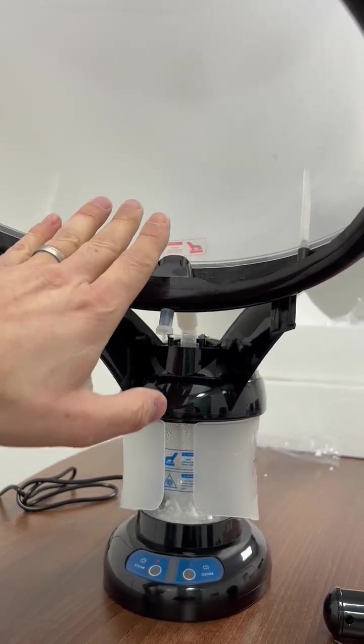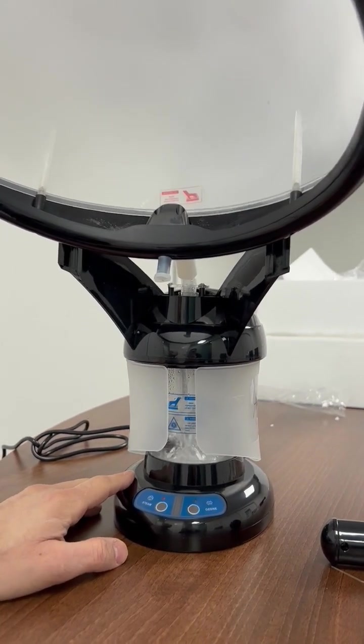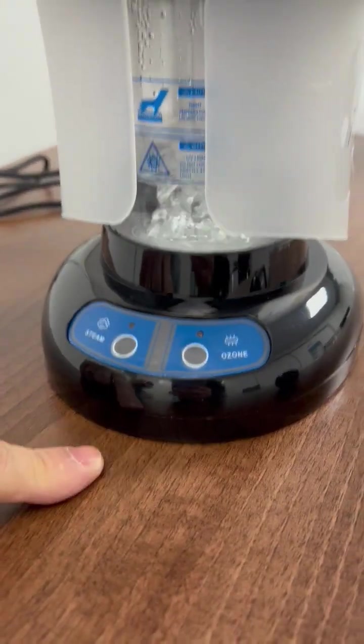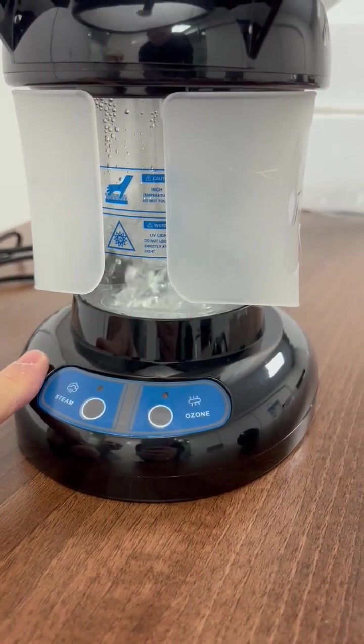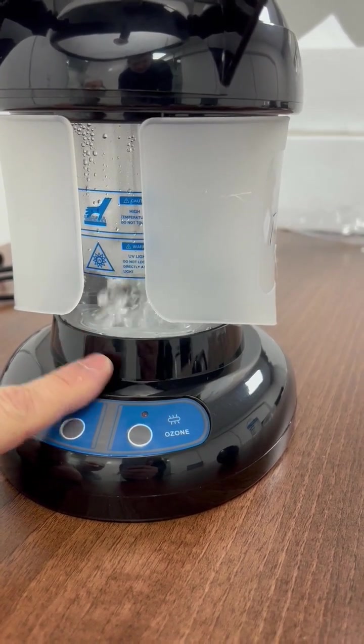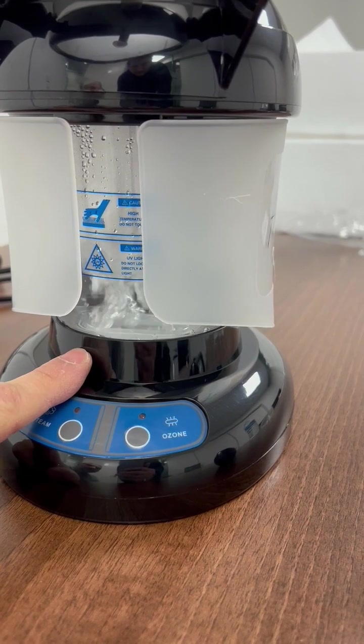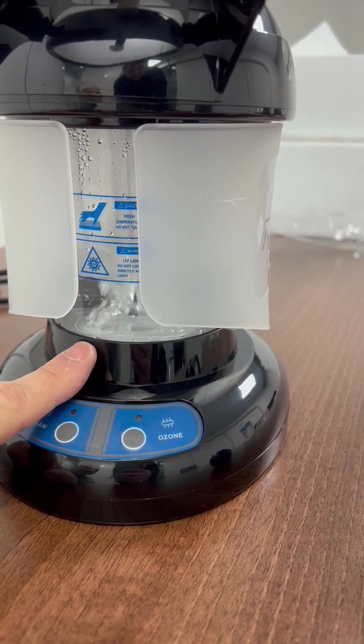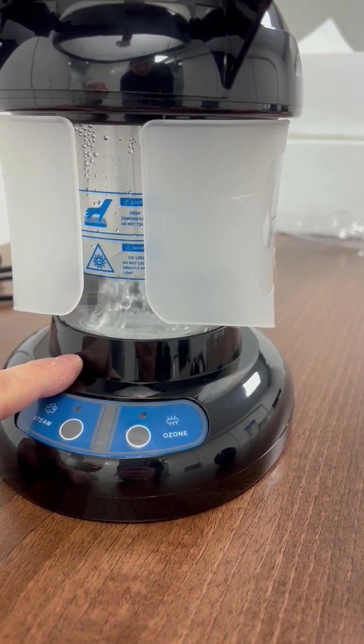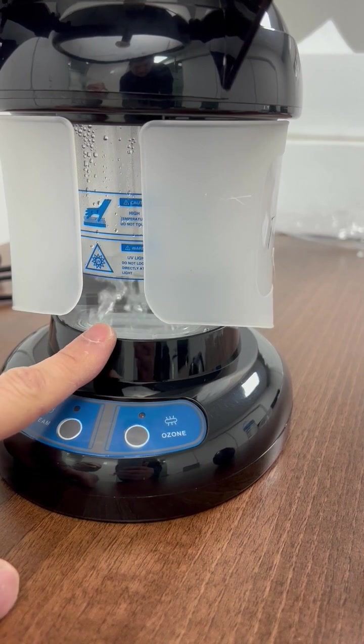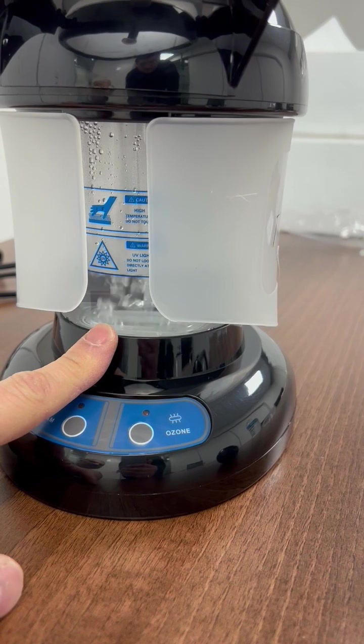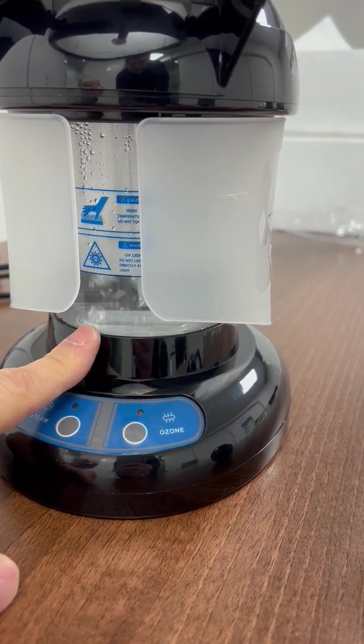Now just to turn it off, we press the steam button. Steamer is off. You'll watch and see the bubbles will start to decrease because the heating element is cooling down slowly. It will take a good 10 to 20 minutes for this to cool down depending on the environment that the steamer is in. Once this cools down, you're free to empty the steamer.